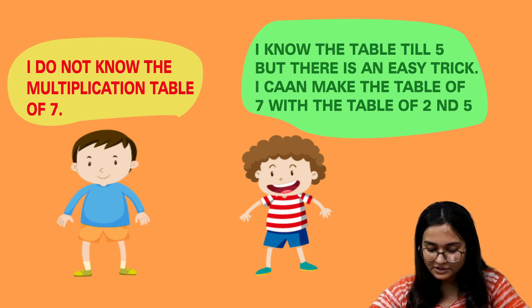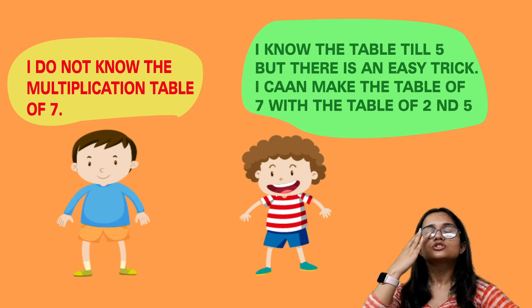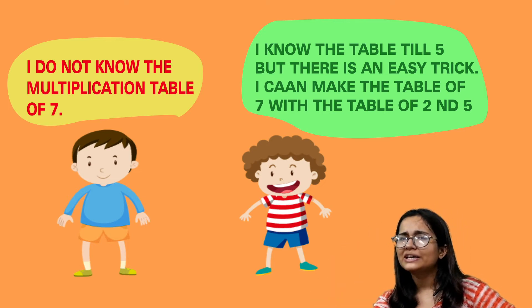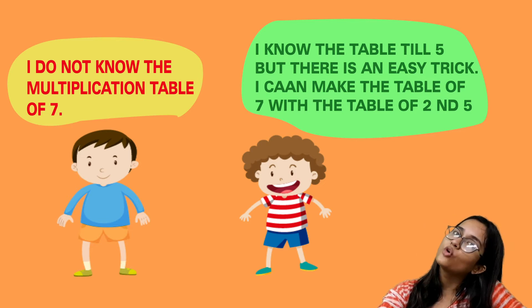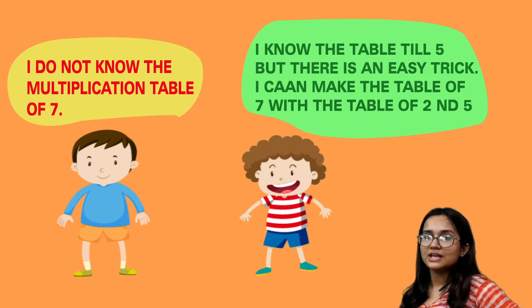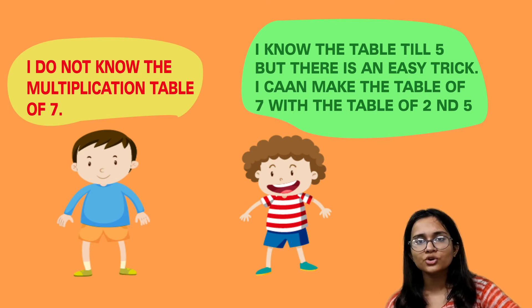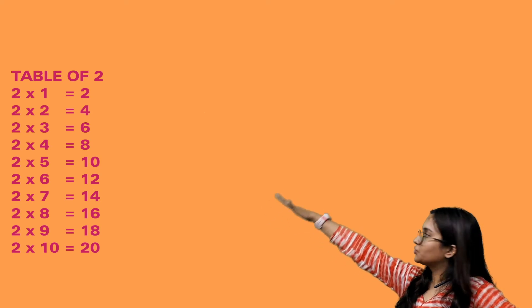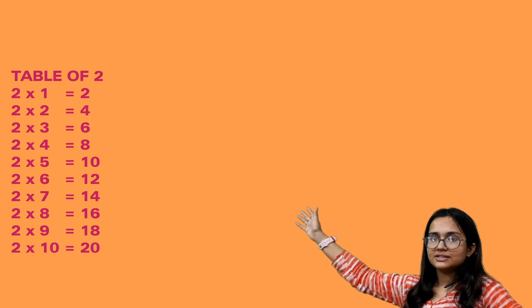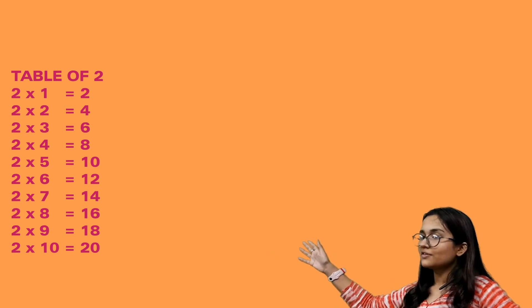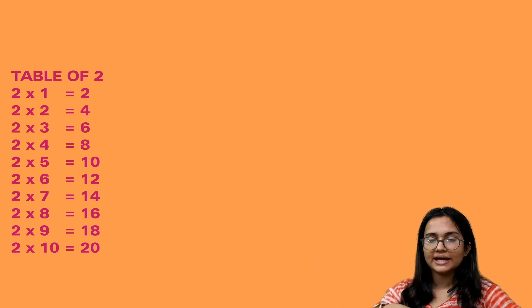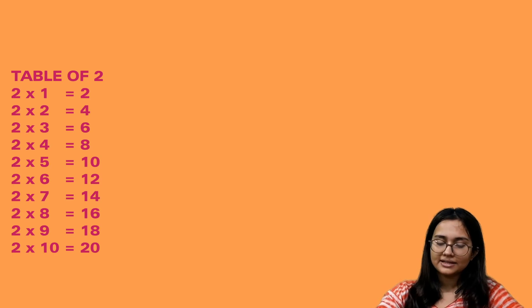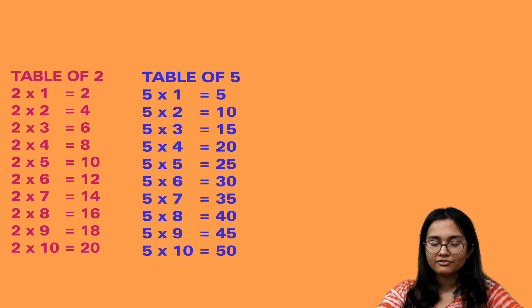I can make the table of 7 with the tables of 2 and 5. Some of you might know the table till 5, some till 4, and some till 7 — but for those who don't, not an issue. You can make the table of 7 with tables of 2 and 5. So we write the table of 2: 2 1s are 2, 2 2s are 4, 2 3s are 6, 2 4s are 8, 2 5s are 10, 2 6s are 12, 2 7s are 14, 2 8s are 16, 2 9s are 18, and 2 10s are 20. And then in the same way we write the table of 5 as well.